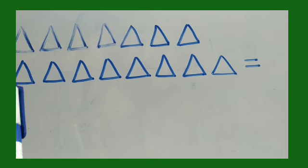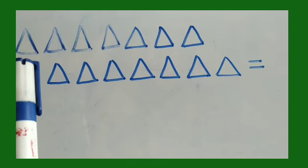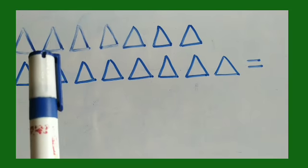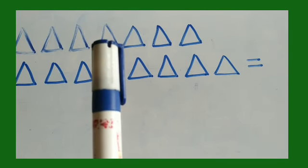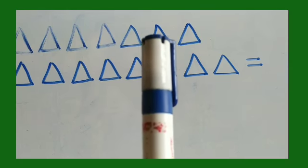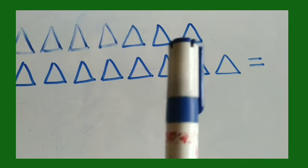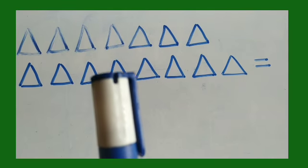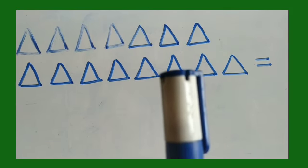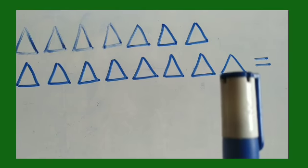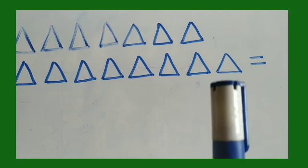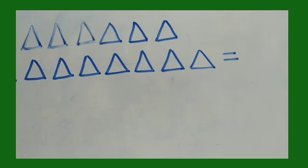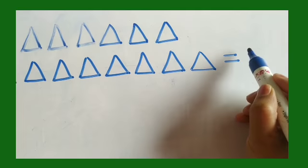Let us count together. You know the counting, yes? One, two, three, four, five, six, seven, eight, nine, ten, eleven, twelve, thirteen, fourteen, and after fourteen comes fifteen. So how do we write fifteen?